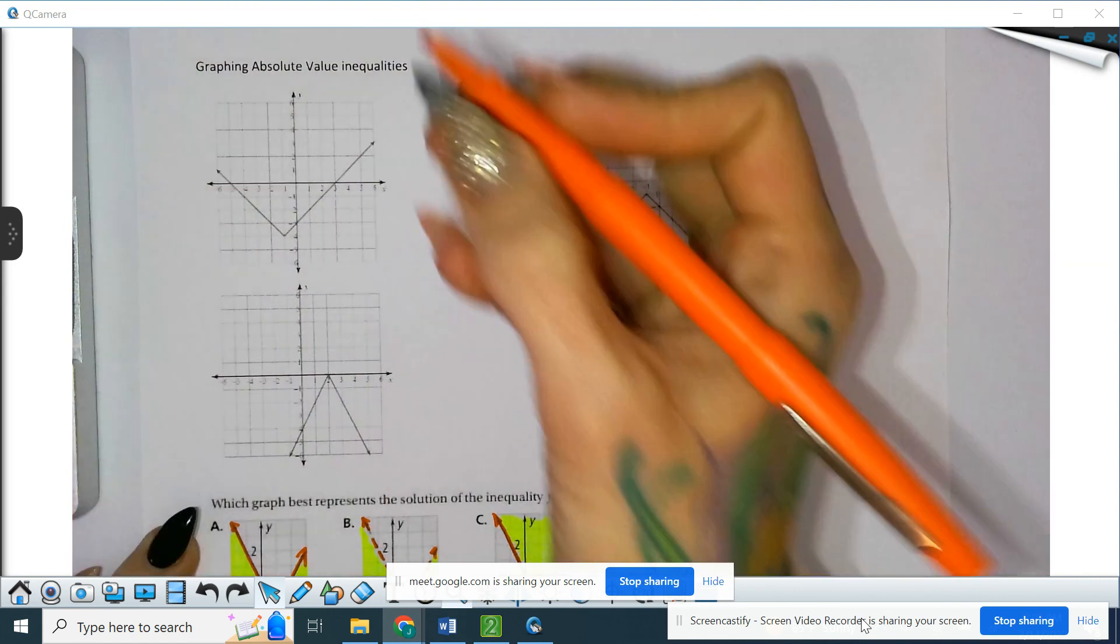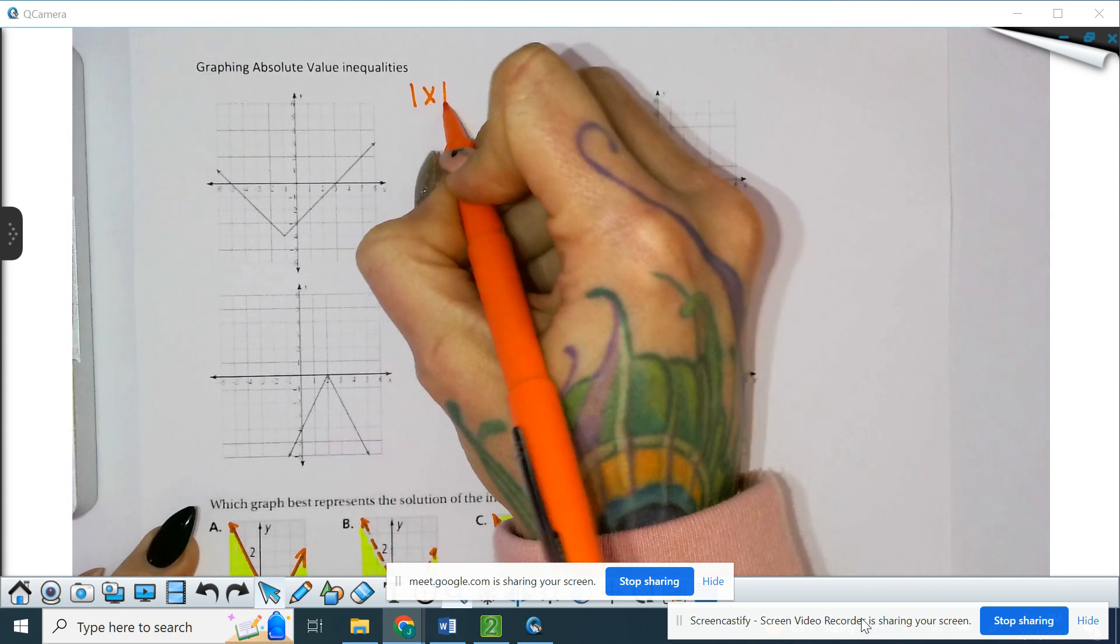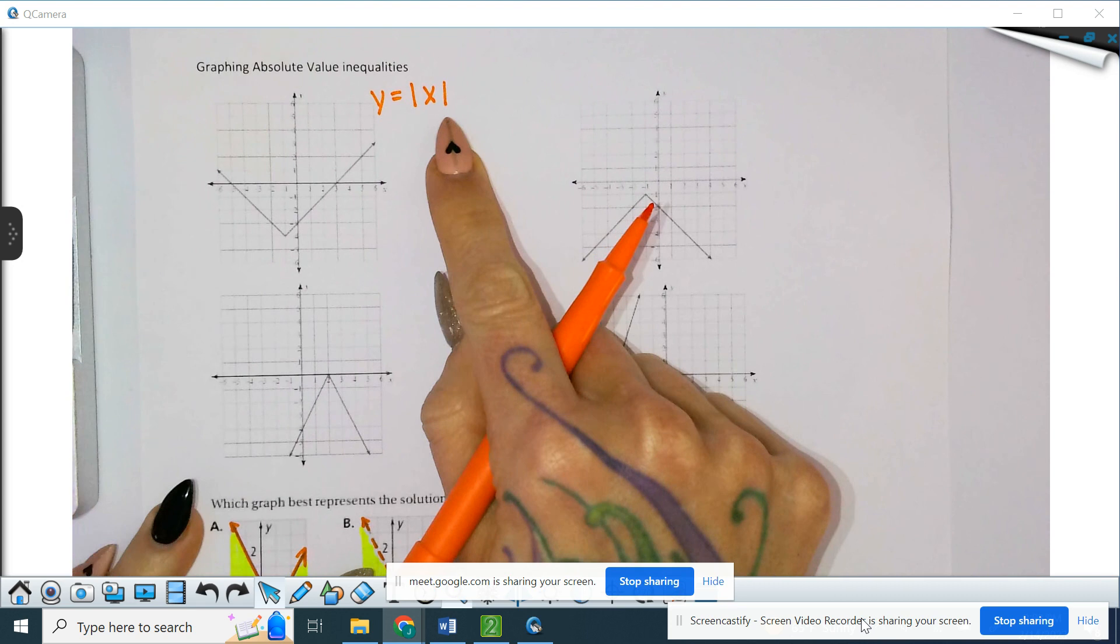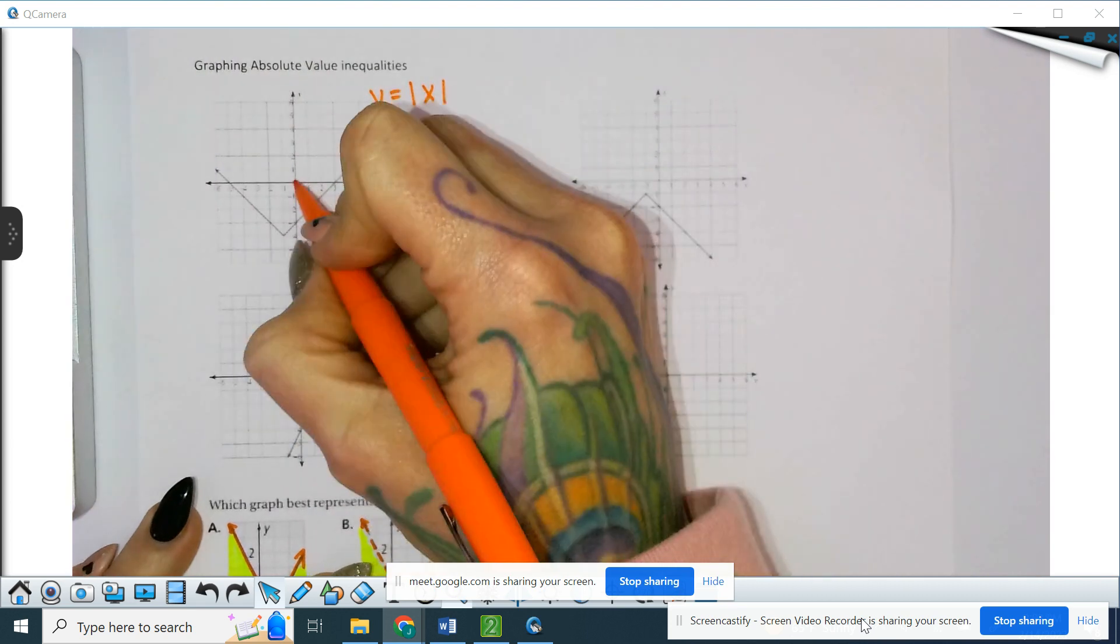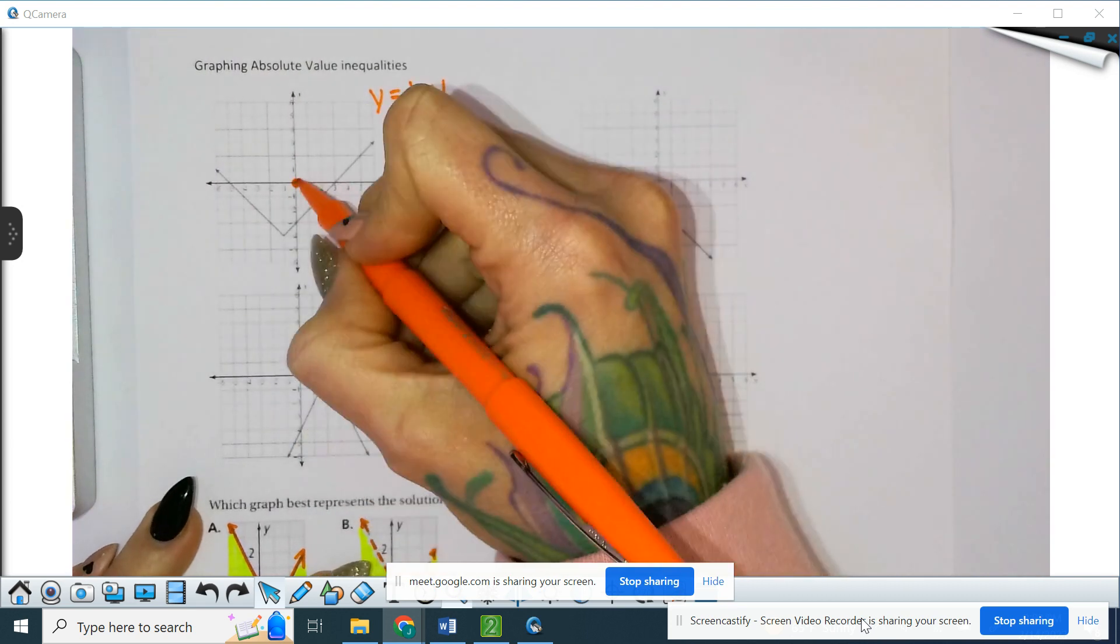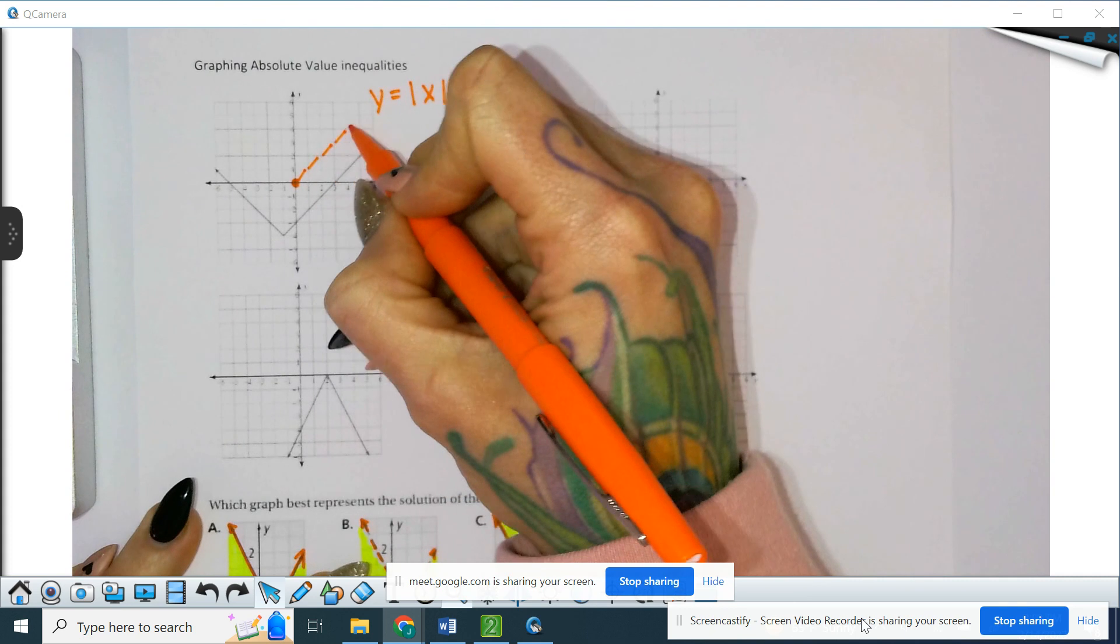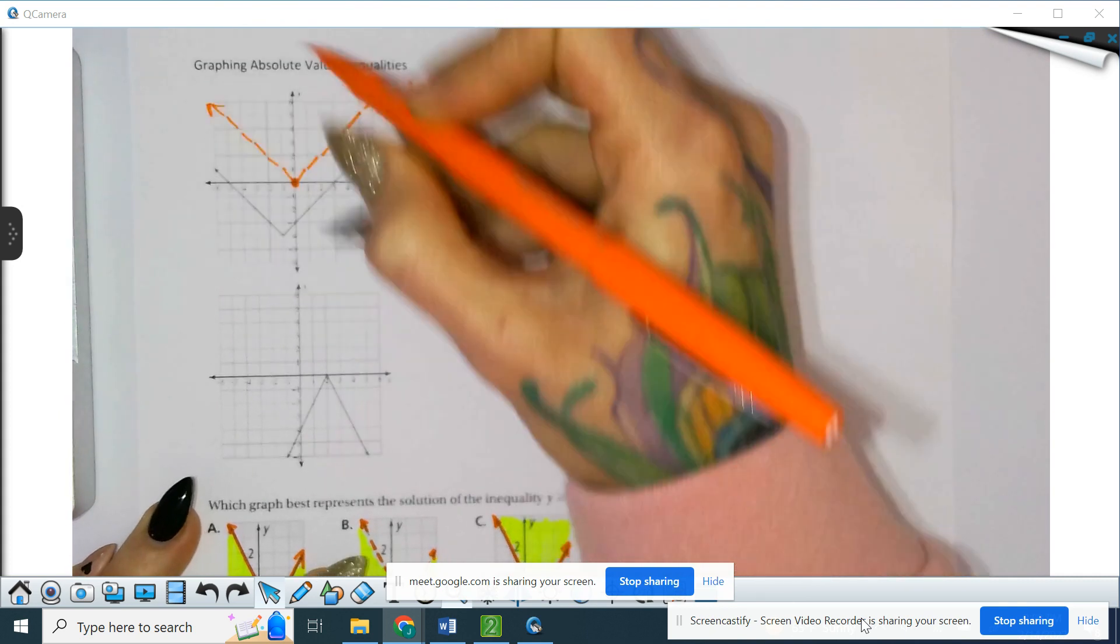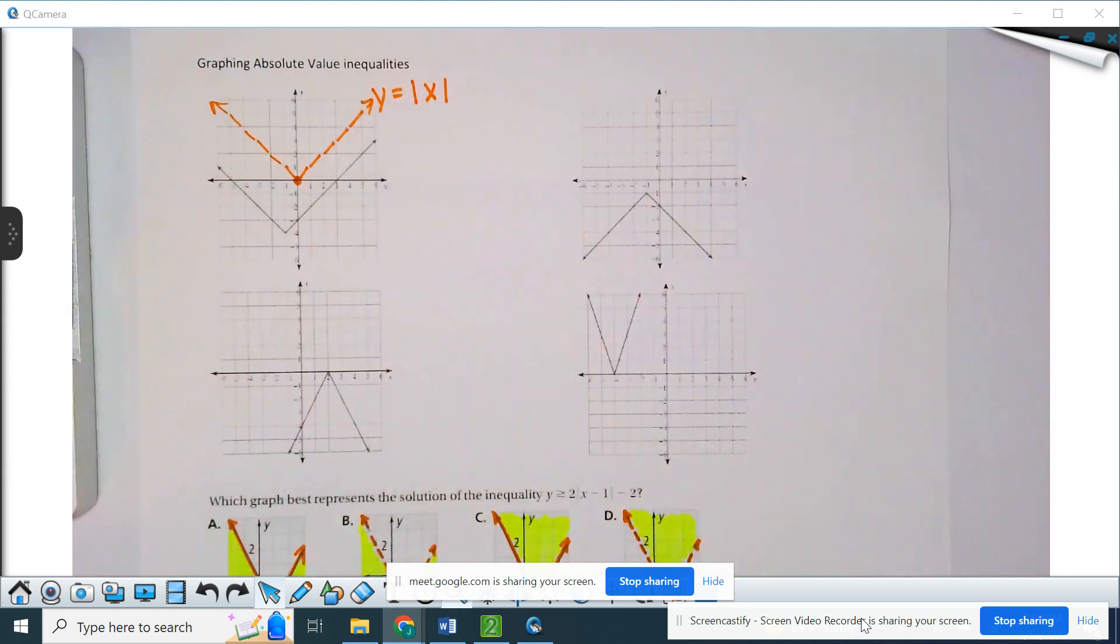Your absolute value parent function is going to be like Y equals the absolute value of X. And then your transformations, so that would be your 0, 0 vertex, the 1 to 1 slope on either side. Hopefully, that's already stuck pretty good. All parent functions are important, but the biggest thing is understanding how they slide and just recognizing them.